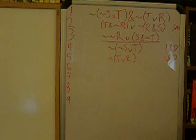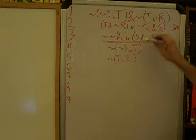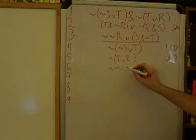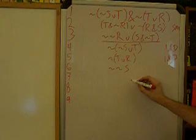Then on line 6, we're going to get from line 4 our negated disjunction decomposition. We're going to go not S. Now I'll just note here, which is probably obvious...